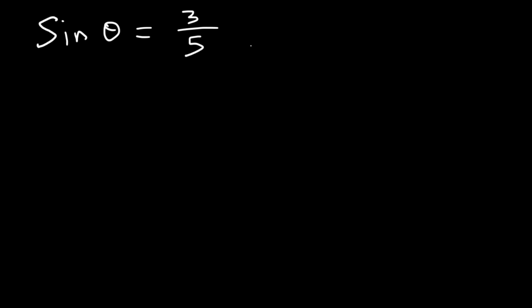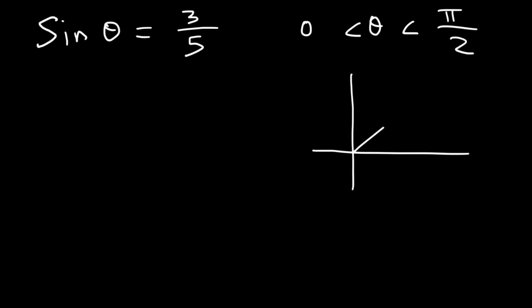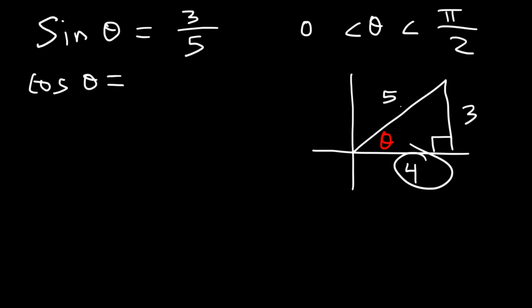Now let's say that sine θ = 3/5 and θ is between 0 and π/2. With this information, find the values of sine 2θ, cosine 2θ, and tangent 2θ. The first thing we need to do is draw a right triangle. Notice that θ is in quadrant 1, so that's where we draw the right triangle. Sine is opposite over hypotenuse, and this is the 3-4-5 right triangle. So cosine θ, by SOH-CAH-TOA, is the adjacent side divided by the hypotenuse, which is 4 over 5.